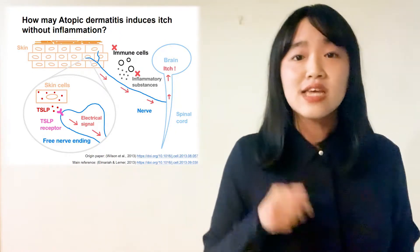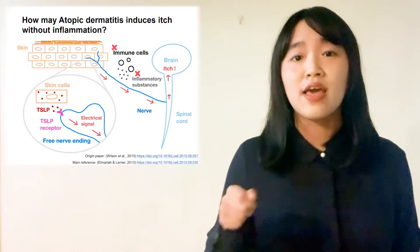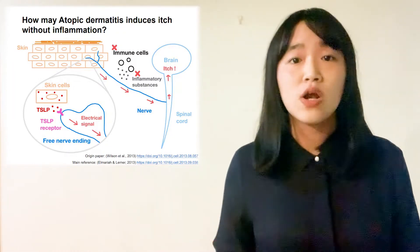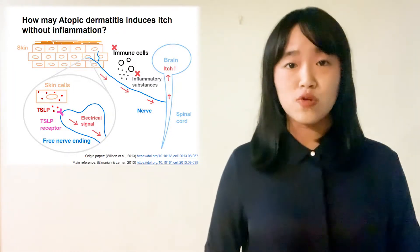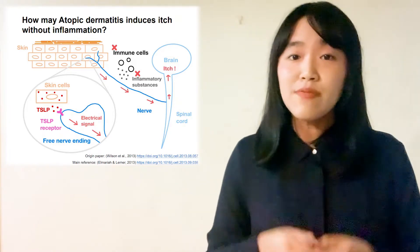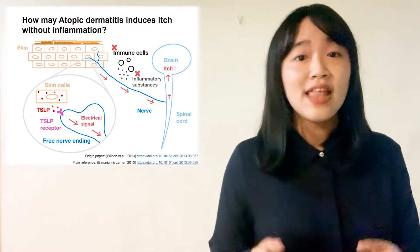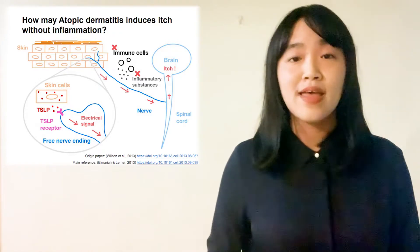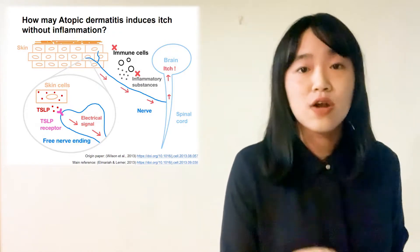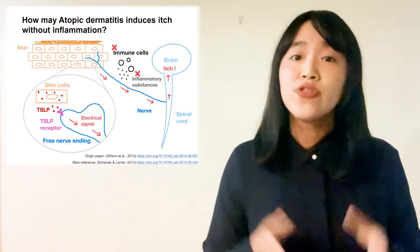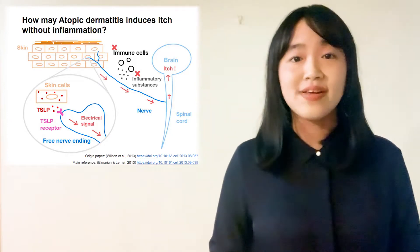Previously, this kind of itch was thought to be caused by inflammatory substances which are released by our activated immune cells. The substances can recruit more immune cells and then initiate inflammation. This process can indirectly activate our neurons to induce itch in atopic dermatitis.